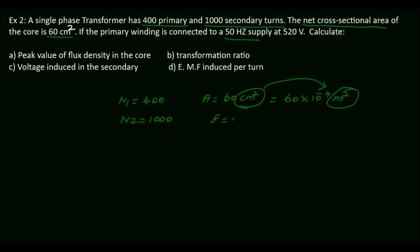The primary winding is connected to a 50 Hz supply at 520 volt. So the frequency F = 50 Hz. Since 520V is applied to the primary winding, this is the EMF induced at the primary side, so E1 = 520 volt.